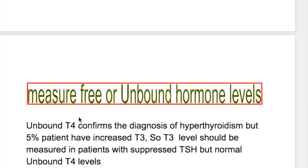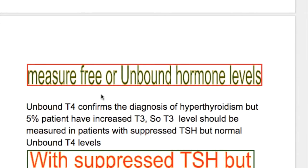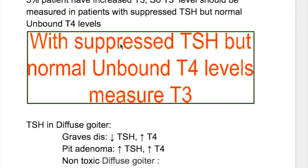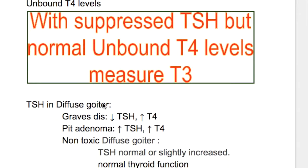Once TSH is found raised or decreased, measure the free or unbound hormone level. Unbound hormone T4 confirms the diagnosis of hyperthyroidism, but 5% of patients have increased T3. So T3 levels should be measured in patients with suppressed TSH but normal unbound T4 levels, because T3 thyrotoxicosis occurs in 5% of patients.